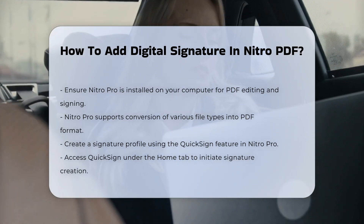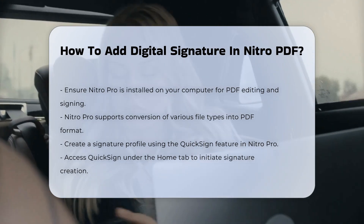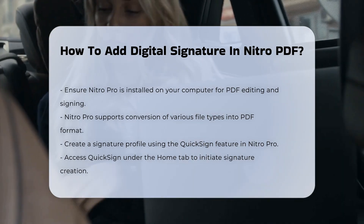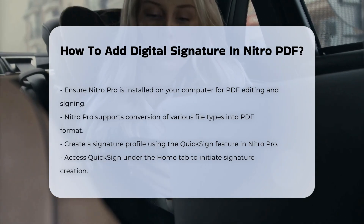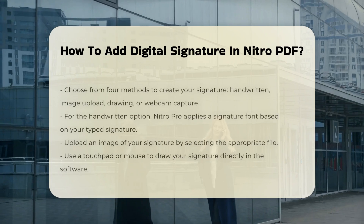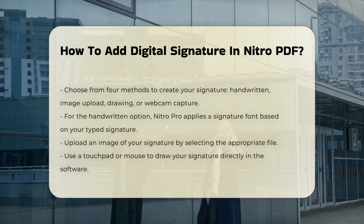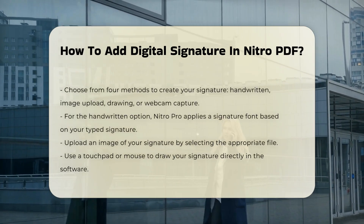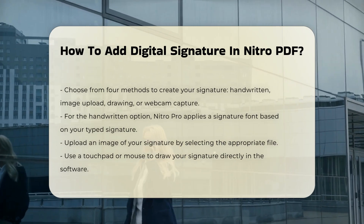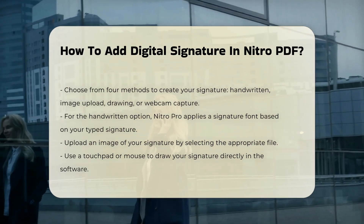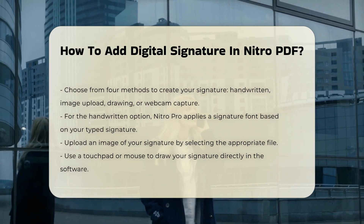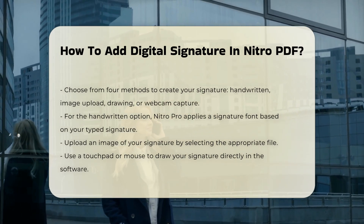Creating a Signature Profile. To sign a document, you need to create a signature profile. This can be done using the QuickSign feature in Nitro Pro. Under the Home tab, select QuickSign and choose to create a new signature. You have four methods to create your signature: Handwritten, uploading an image of your signature, drawing it using a touchpad or mouse, or capturing it using your webcam.